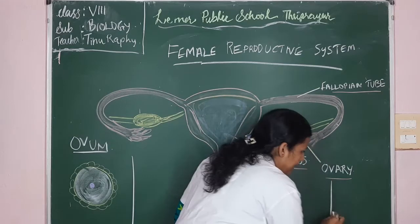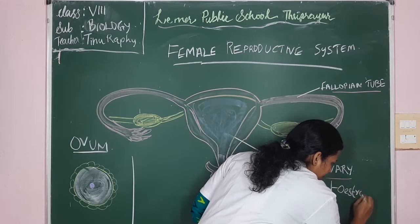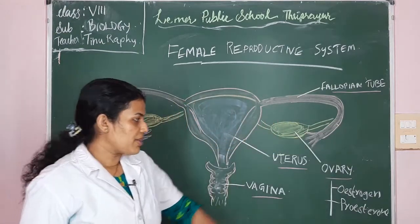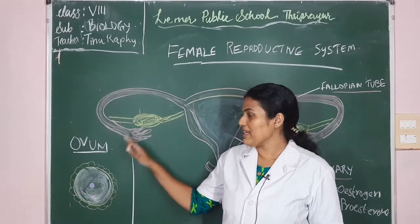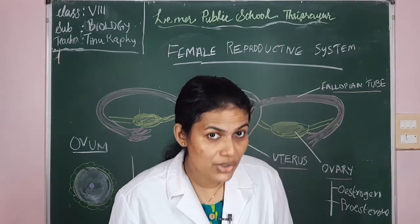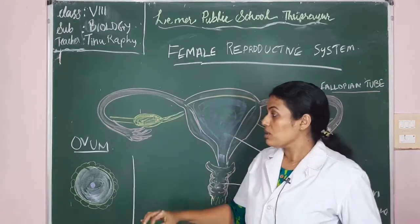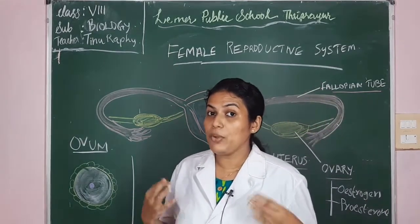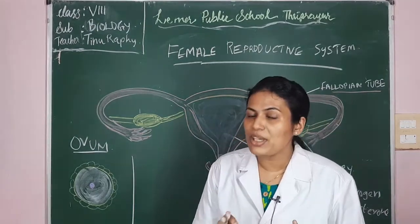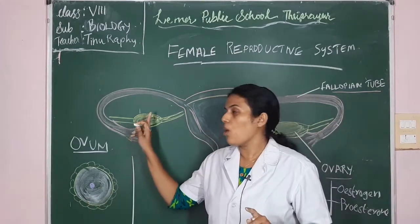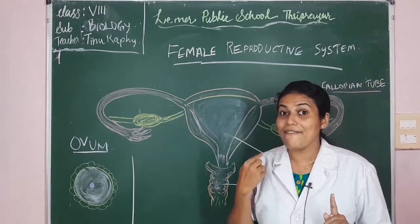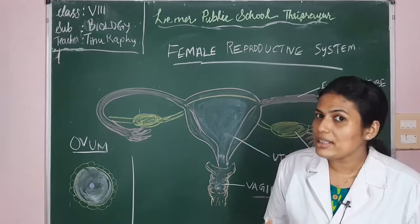The ovary produces estrogen and progesterone. Now when is this ovum released from the ovary? The ovum is released at puberty. A single ovum is released every month in a mature female — from either of the two ovaries alternatively each month. So both ovaries become functional alternatively.